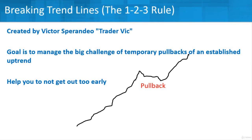There are also some interesting rules out there. One interesting one is the 1-2-3 rule. It was created by Trader Vic, a famous trader and author. The whole goal of this is to manage the big challenge of temporary pullbacks in the case of an established uptrend. The 1-2-3 rule is related to definite established uptrends and trying to avoid selling out during a temporary pullback — you want to keep running with that trend. It helps you to not get out too early. So if you bought early in the trend and had this nice run-up, and then it pulls back — the idea of the 1-2-3 rule is that you're not selling during the pullback.